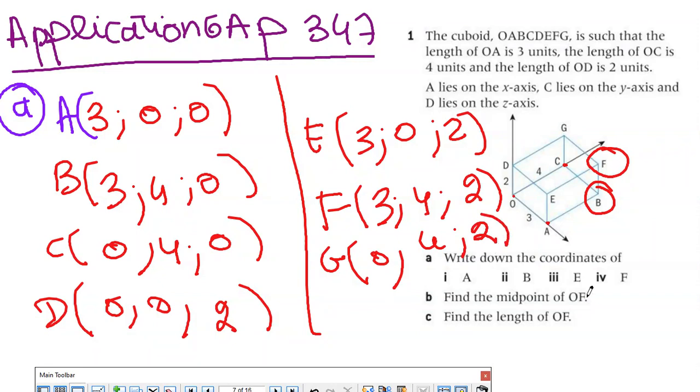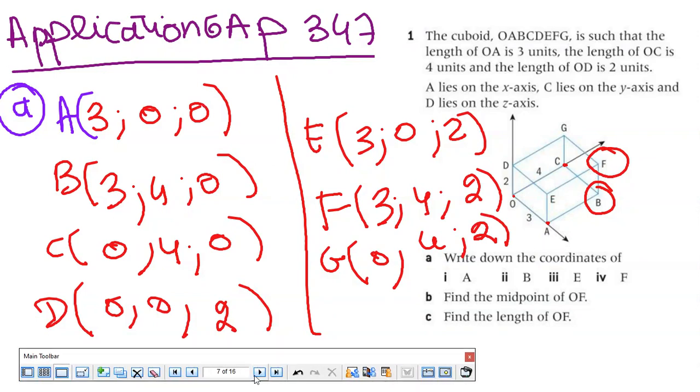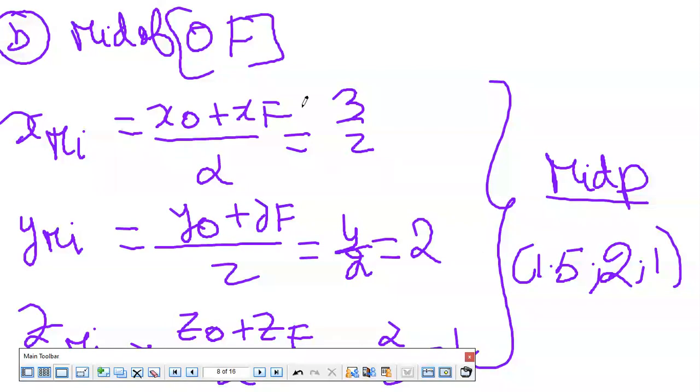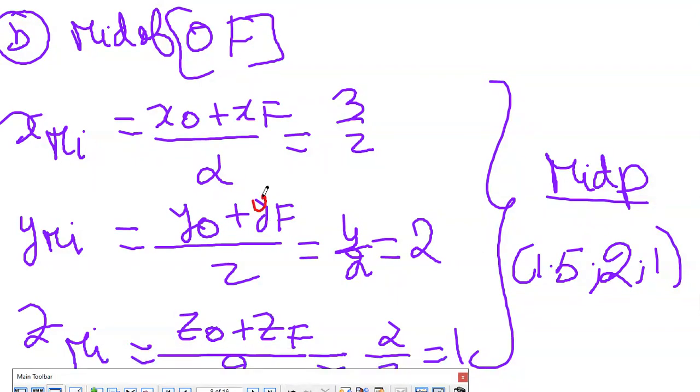Part B: Find the midpoint of OF. Using the midpoint formula, it's X of O plus X of F over 2, Y of O plus Y of F over 2, and Z of O plus Z of F over 2. I just replace and got the coordinates of the midpoint of OF: (1.5, 2, 1). This is easy.